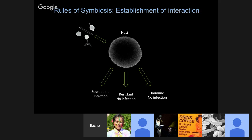But beyond being able to establish that natural variation, we need to understand the rules of symbiosis. In order to understand what those patterns mean, we need to understand how those interactions are happening. Here's what we know about virus-host interactions at this stage: we have a set of viruses that interact with the host, and the host can be susceptible, resistant, or immune.